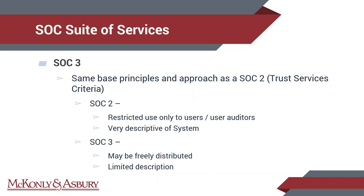SOC 3 is simply a SOC 2 repackaged for general distribution. It's for the same type of organization, focused on the same types of criteria, but while a SOC 2 is very detailed and therefore restricted only to users and their auditors, a SOC 3 is very limited in the amount of information it contains but concludes on the exact same thing — that controls are in good place. Because it's a limited description, it can be more broadly distributed and posted on websites. A number of firms do both a SOC 2 for detailed customer review and a SOC 3 to post online for prospective users.